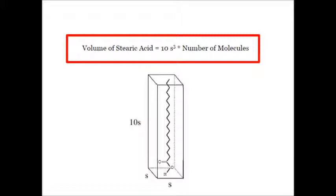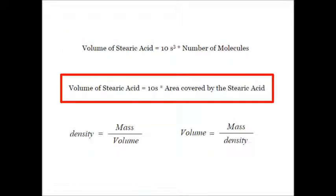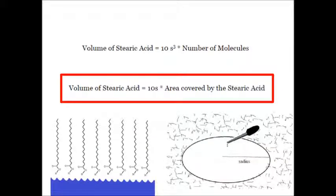Equation 2: the volume of stearic acid is equal to 10s times the area covered by the stearic acid. Think about that puddle — it is 10s tall and covers the area of the stearic acid. That's method number 2.